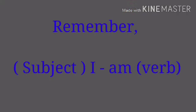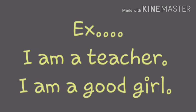One thing to remember: 'I'. Though I is a singular subject, with I we always use 'am', never 'is'. I am a teacher. I am a good girl. We never say 'I is a teacher' or 'I is a good girl'. We say 'I am a teacher' and 'I am a good girl'.